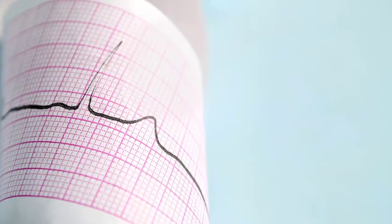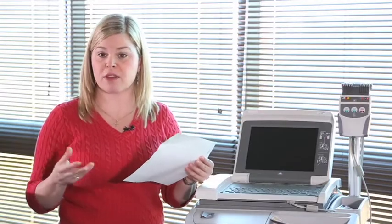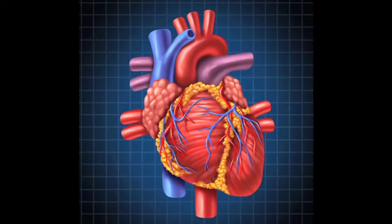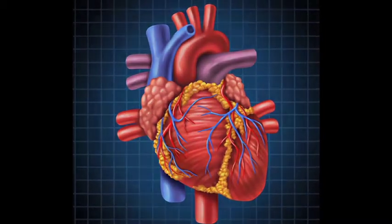The EKG will help tell us if the patient has a heart rhythm problem, like an arrhythmia. It can diagnose acute heart attack, if they have chamber enlargement or congenital heart disease. It can tell us all sorts of things.